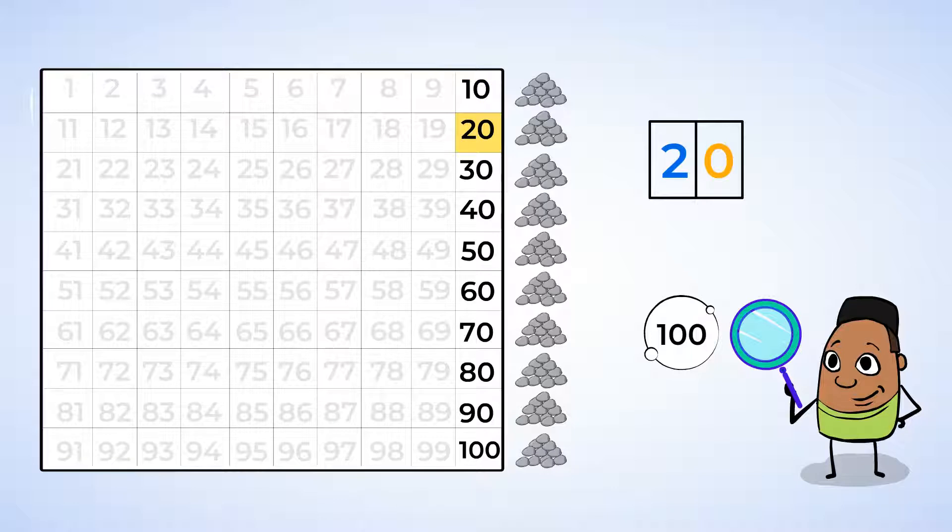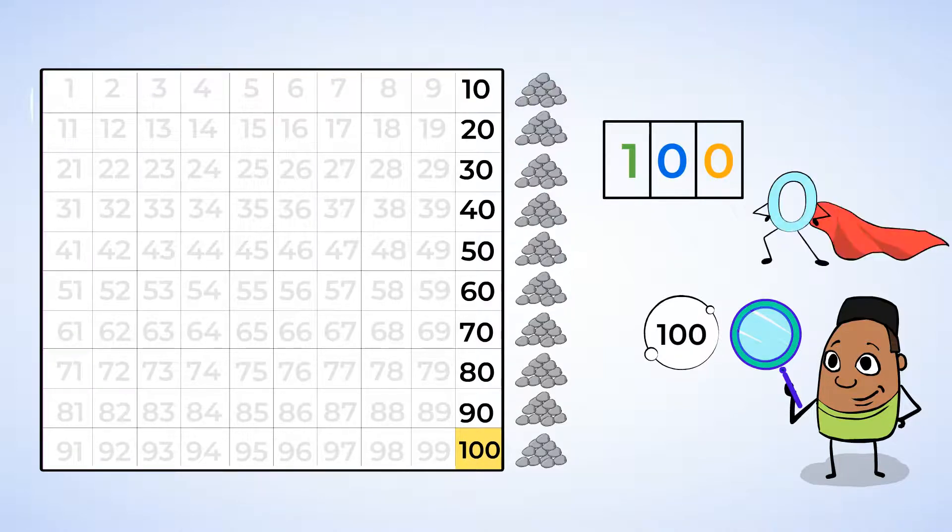Okay. 10, then 20. 20 looks like this. A 2 and a 0. Zero the Hero. 10, 20, then 30. 30 is a 3 and 0. Let's keep going. 10, 20, 30, 40. 40 is a 4 and a 0. 50 is next, a 5 and a 0. Then 60, a 6 and a 0. Next, 70 is a 7 and a 0. 80 is an 8 and a 0. 90 is a 9 and a 0. And finally, 100. Now 100 is a little bit different. It's a 1, then a 0 and another 0. That's cool. This number gets two Zeroes the Heroes. Zero the Hero really saved the day here.